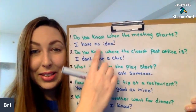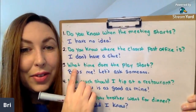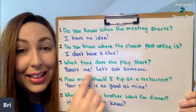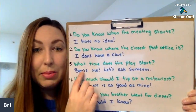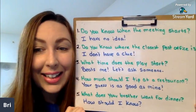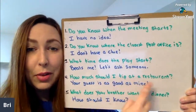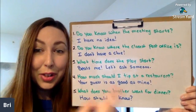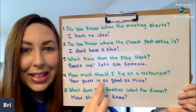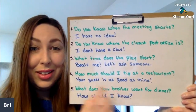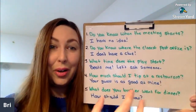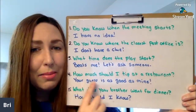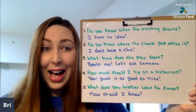I'd recommend trying to remember at least those first two expressions. Number three: 'What time does the play start?' — 'Beats me, let's ask someone.' So maybe this is with a friend. Number four: 'How much should I tip at a restaurant?' — imagine traveling to America for the first time and you ask your friend who also doesn't know. 'Your guess is as good as mine' — we both have no idea, so our guesses are as good as each other's.